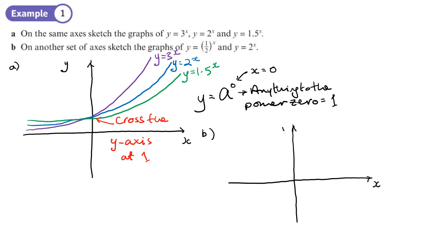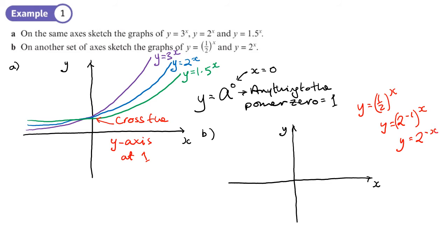For part b, on a different set of axes, we draw the graphs of y equals one-half to the x and y equals 2 to the power x. When we do y equals one-half to the x, we can write one-half as 2 to the power negative 1, so it becomes 2 to the power negative x.